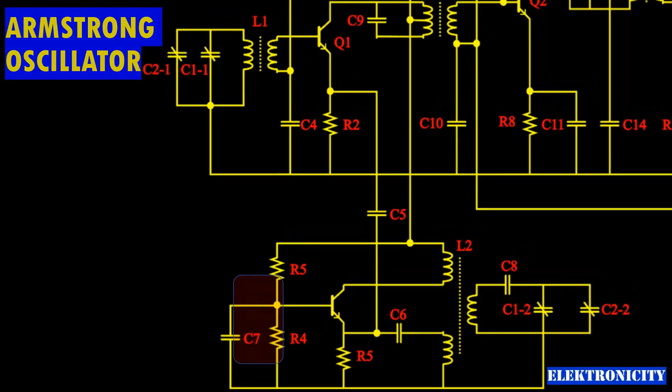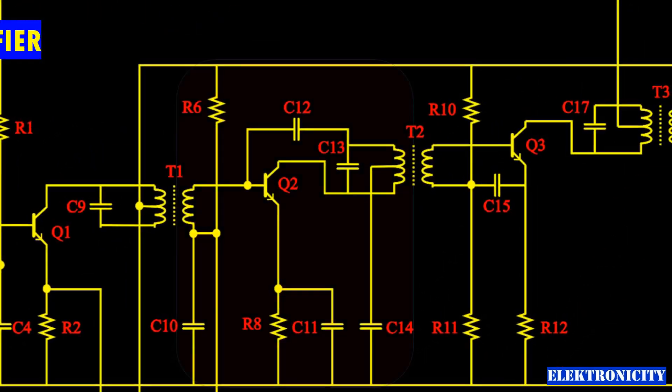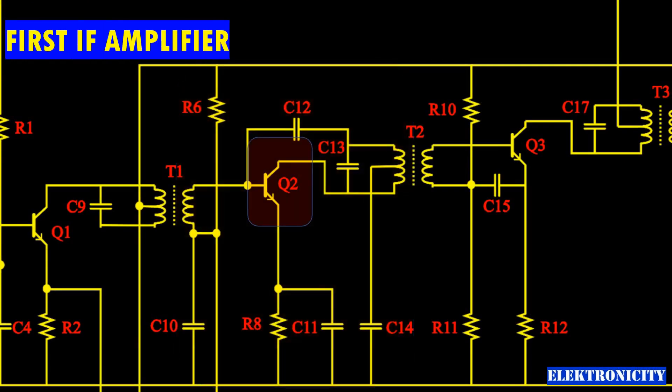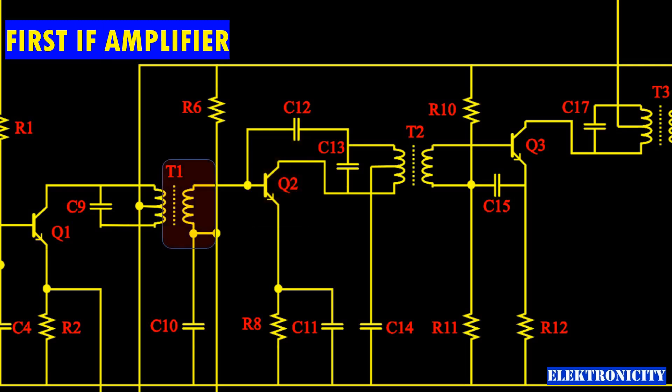First IF amplifier: this stage includes the transistor amplifier Q2. The output of first IF filter transformer T1 is connected to the base of Q2 transistor in the IF amplifier. The output of first IF amplifier connects to the second IF amplifier stage through transformer T2.